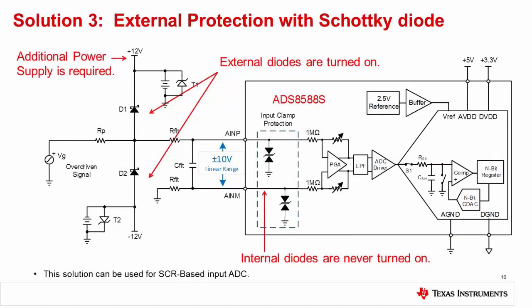Throughout this section of Precision Labs, we've been looking at data converters with integrated analog front ends. These devices use internal Zener clamp diodes and SCR ESD clamps. The input range of these data converters is typically plus-minus 10 volts, but the analog supply voltage is only 5 volts. Generally, this type of system will not support voltage supplies higher than 5 volts. As a result, external TVS diode protection solutions connected to ground are attractive. In cases where higher voltage supplies are available, a Schottky diode clamp is a better solution, since the voltage that the Schottky clamps at is generally more precise than the TVS breakdown voltage. Furthermore, Schottky diodes have a lower capacitance than TVS diodes, so there is less of an impact on distortion.